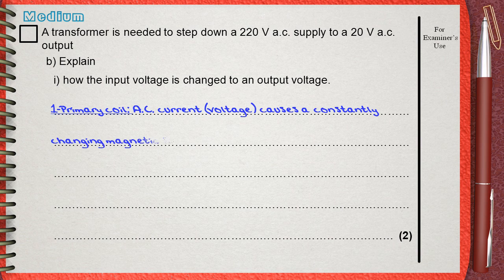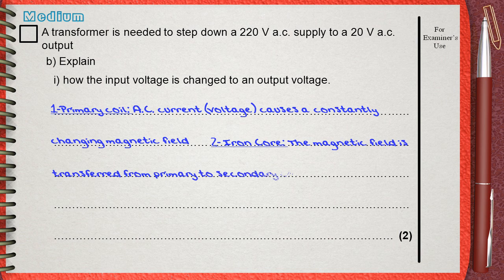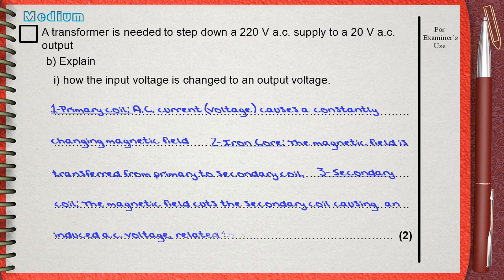We can say that the transformer works in three steps. Number one: in the primary coil, AC current or voltage causes a constantly changing magnetic field. Then, in the iron core, this magnetic field is transferred from the primary coil to the secondary coil. The third step: in the secondary coil, this magnetic field cuts the wires of the secondary coil, causing an induced AC voltage.